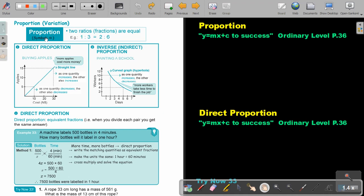It's almost like an 8 on the side, but it has an open end. So two ratios or fractions are equal. Say for example, 1 to 3 is equal to 2 to 6. But you get two types of proportion. You get direct proportion, and you get inverse or indirect proportion.